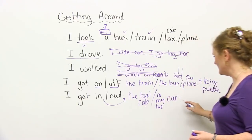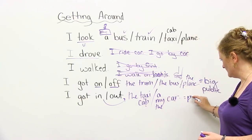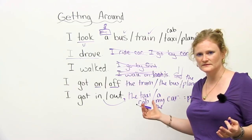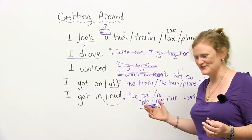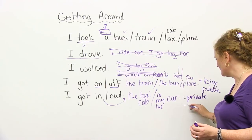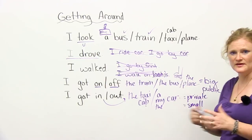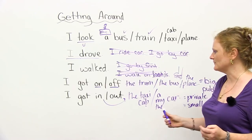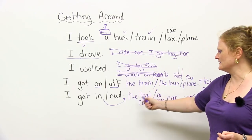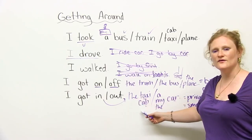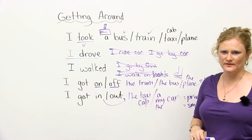So what does taxi and a car or a cab have in common? Do you know the answer? They are private. There aren't a lot of people in your car or in your taxi. And they're small, which means they can't have as many people as on a train, a bus, or an airplane. So you're going to say, I got in the taxi, and I came to school. Or, I got out of the taxi, and I went to the bar.